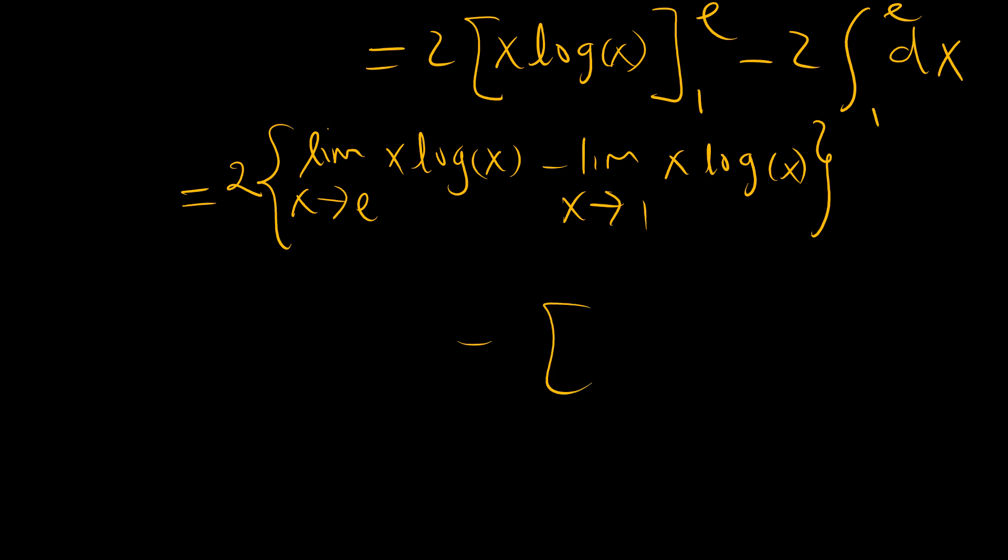When we integrate this, we get x, 1 to e. Now as x tends to e, log of e is 1, and so we get e. Log of 1 is 0, so this is 0, minus 2.